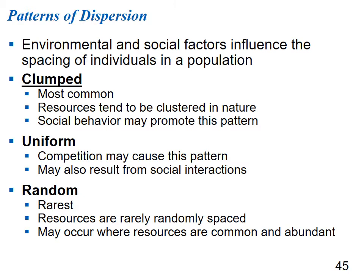Three general patterns of dispersion are clumped, uniform, and random. Clumped dispersion is the most common because resources tend to be clustered in nature, and pro-social organisms tend to be found together. Uniform dispersion occurs when organisms are evenly spread out — competition for resources or territorial behavior can cause this pattern. Random dispersion is the rarest because resources are rarely randomly spaced, but if resources are super abundant in an area, you might see random dispersion.